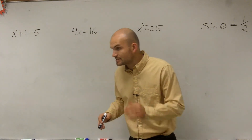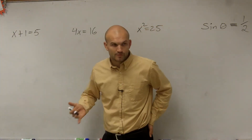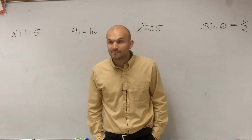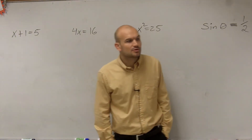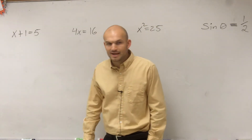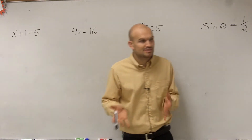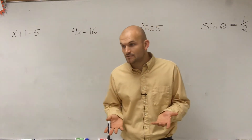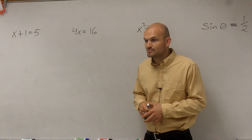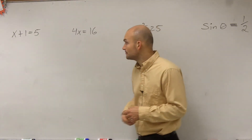Let's step back into Algebra 1 when we were looking at solving an equation. For solving an equation, what we use is inverse operations to isolate the variable that we were trying to solve for. So in this problem we had x plus 1 equals 5, and what we want to do is isolate the variable — get the x by itself. So what we did is use the inverse operation, which pretty much means the operation that's going to undo what's happening to the variable.